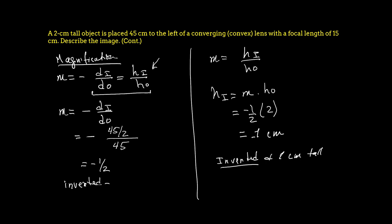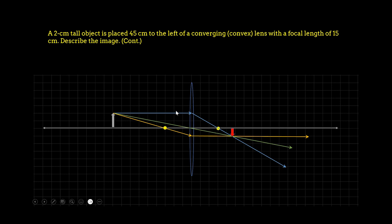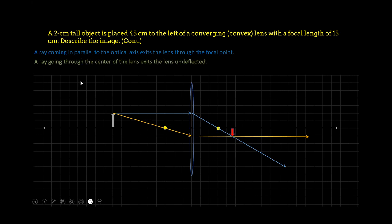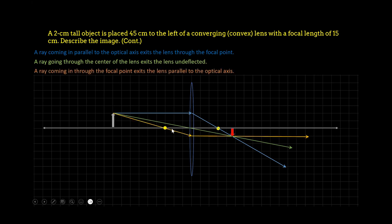That's the thin lens equation analysis. Now let's do the ray tracing. The three principal rays are: first, the ray parallel to the axis goes through the focal point; second, the ray through the vertex passes straight through unbent; third, the ray through the focal point comes out parallel. The image sits at roughly 22.5 centimeters — about one centimeter in height, inverted and real. The ray tracing supports the thin lens equation result.